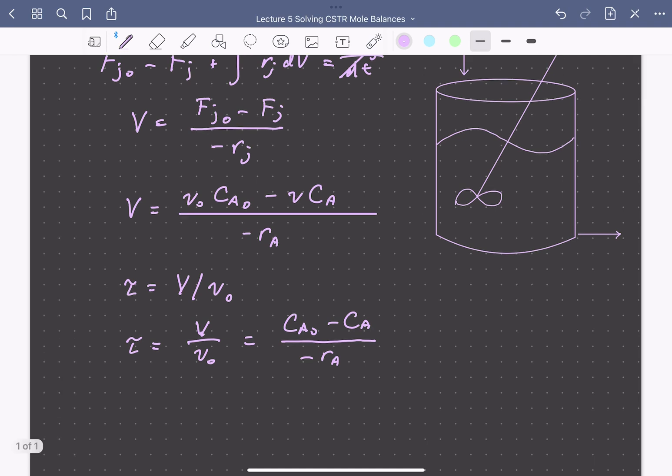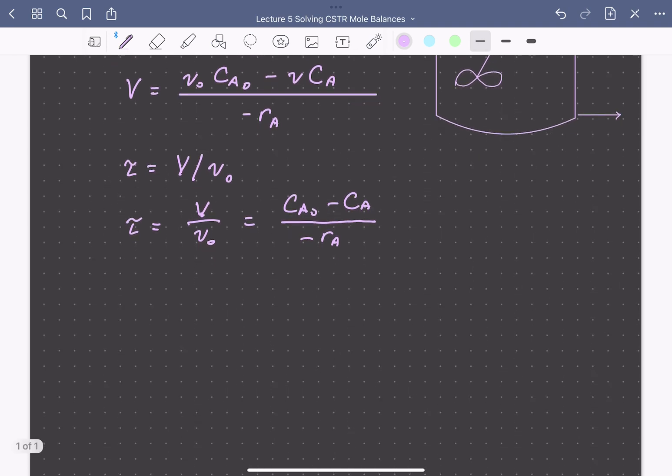Let's look at this for a couple examples. If we have a first order irreversible reaction, reaction A going to B, with a rate expression for the rate of consumption of A being KCA,